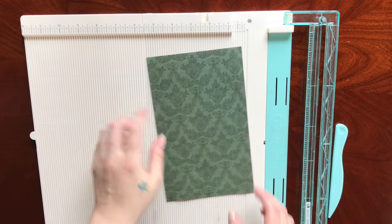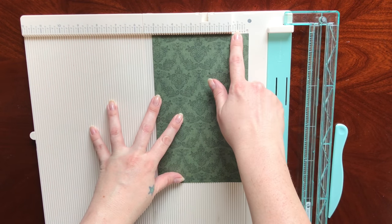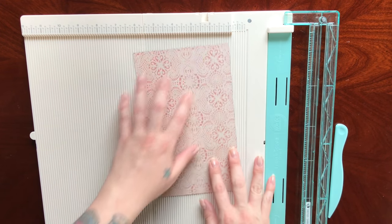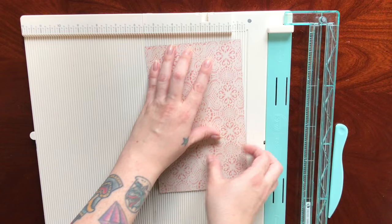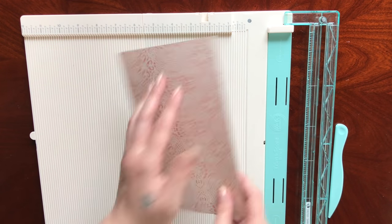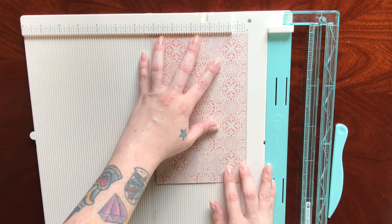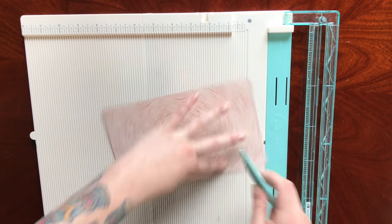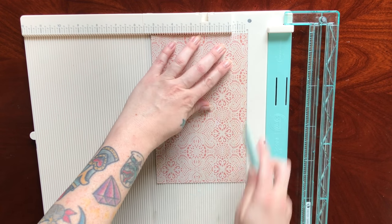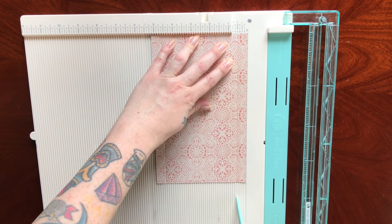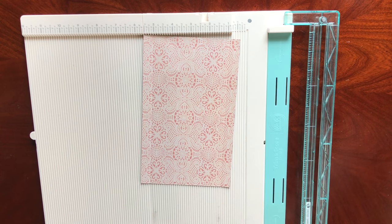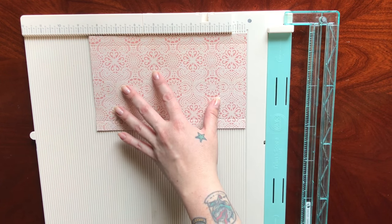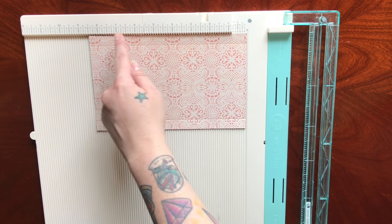Next, we're going to score half an inch in on each side. I'm flipping it around because I'm going to have this as my outside. Then turn it this way and score at 3 inches and at 6 inches.